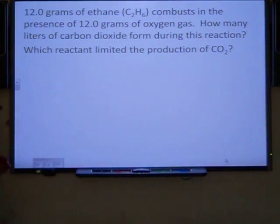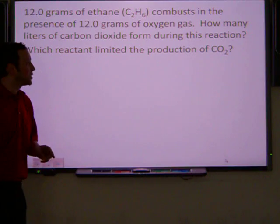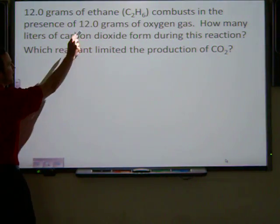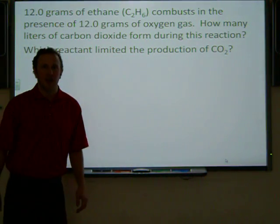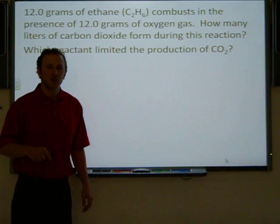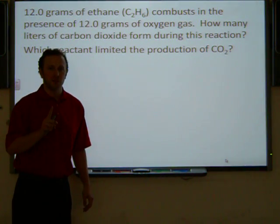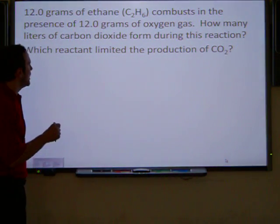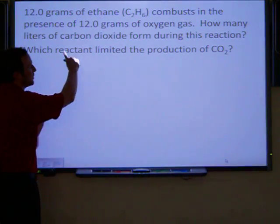So first thing, in a limiting reagent problem, we know there's a couple of things that will always hold true. We have to be given two amounts, and in this case we were provided with 12 grams of ethane and 12 grams of oxygen gas. And at the end, we are almost always going to be asked to solve for one single chemical species. And in this problem, we are trying to determine how much of the carbon dioxide formed.